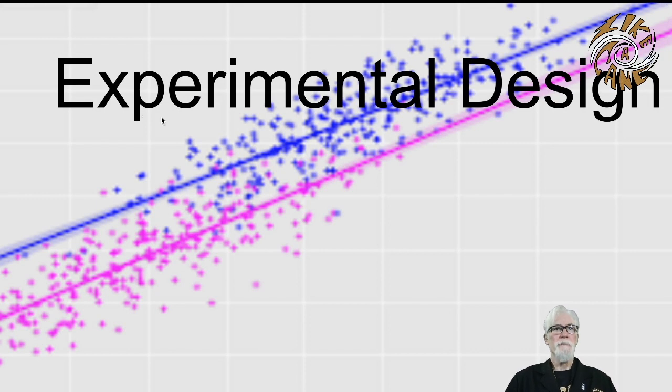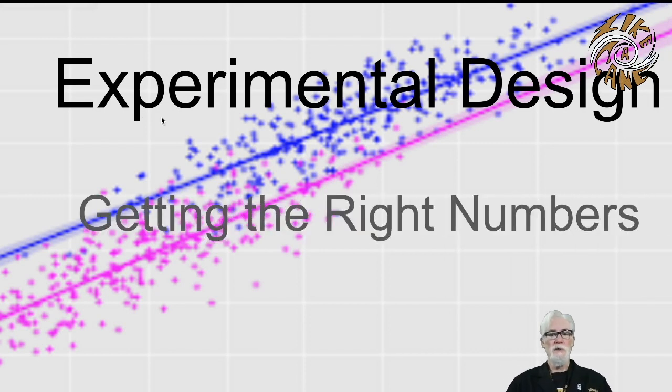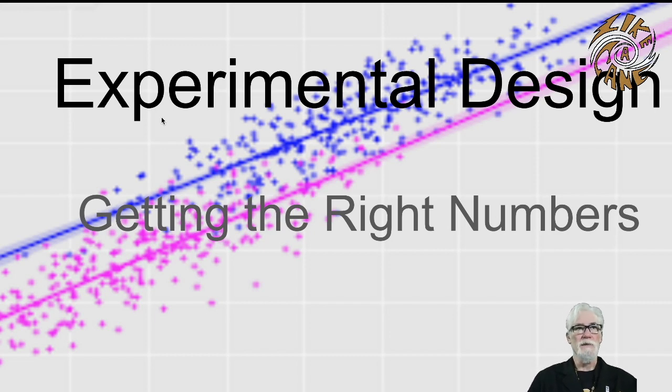Today we're talking about experimental design, and experimental design really is just getting the right numbers into our models so we can make them predictive and useful.